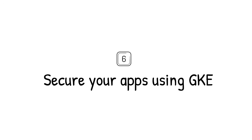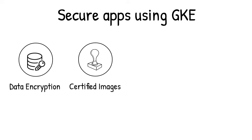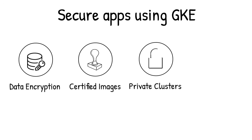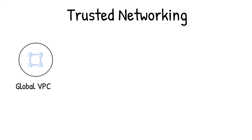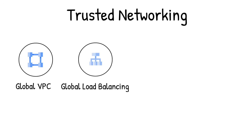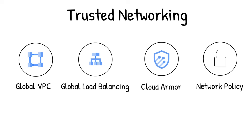How to secure your app using GKE? GKE is secure by default with automatic data encryption at rest and in transit. The OS images you deploy are Google certified. You can access your clusters without a public IP on the internet, and you can control access using Identity and Access Management and role-based access controls. With GKE, you get trusted networking. Using global VPC, you can connect to and isolate clusters. Using global load balancing, you can deploy public services behind a single global Anycast IP. Using Cloud Armor, you get easy protection against layer 7 and DDoS attacks. And using networking policies, you can control the communication between your cluster pods.